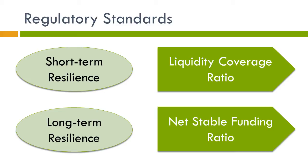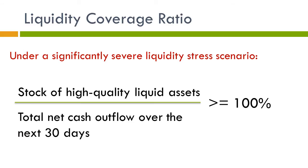The first objective is to promote the short-term resilience of the liquidity risk profile of banks. This standard ensures that a bank maintains an adequate level of high-quality liquid assets that can be converted into cash to meet its liquidity needs for 30 days under a significantly severe liquidity stress scenario specified by supervisors. As you can see in the formula, this standard requires that the ratio of high-quality liquid assets to total net cash outflow over the next 30 days is more than or equal to 100%.